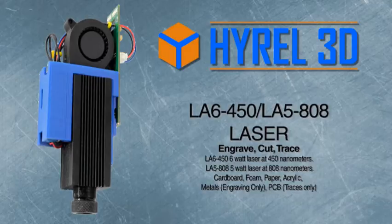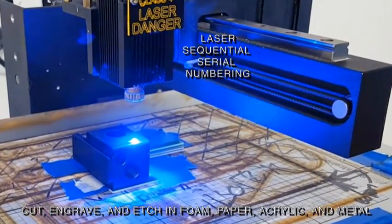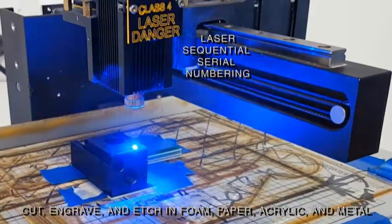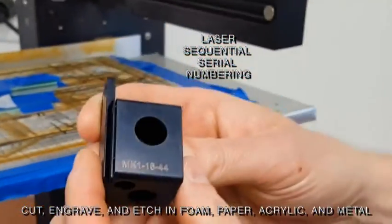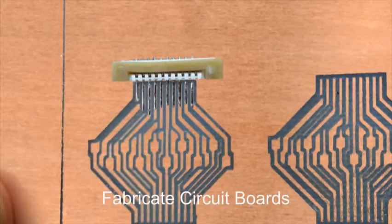These are useful for engraving, cutting, and burning the solder mask off of traces. You can cut, engrave, and etch in foam, paper, acrylic, and metals. You can also burn off the solder mask on the circuit board to do a chemical etch later on.